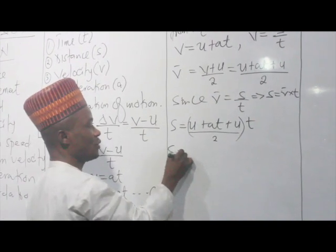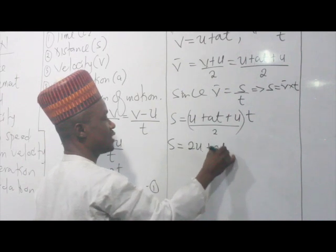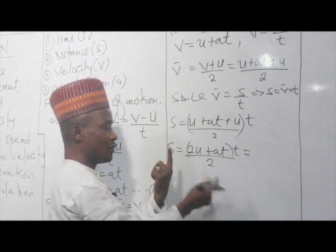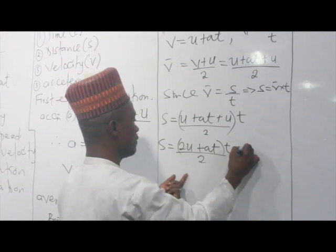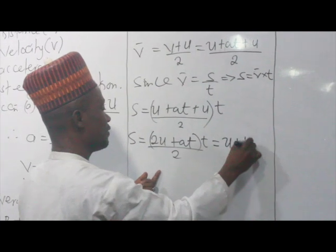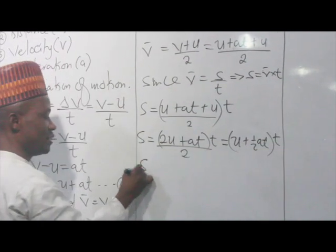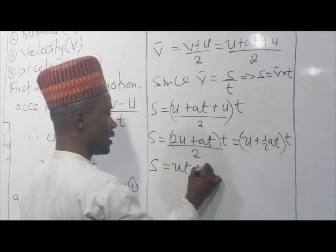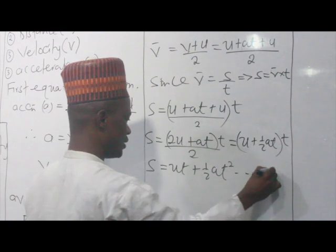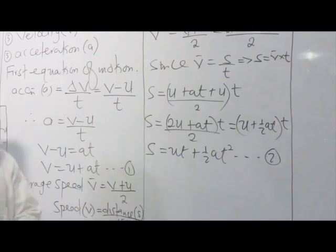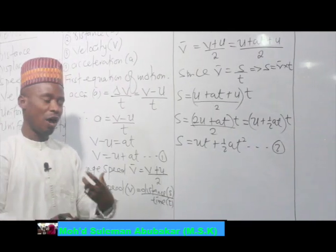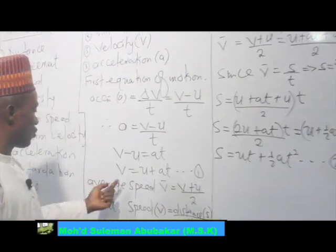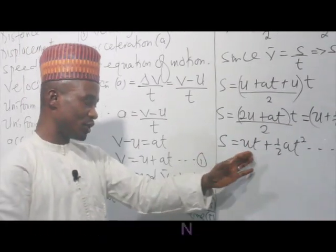Expanding this expression gives s = (2ut + at²) / 2, which simplifies to s = ut + ½at². This is the second equation of motion. In summary: equation 1 is v = u + at; equation 2 is s = ut + ½at². Here v is final velocity, u is initial velocity, a is acceleration, t is time, and s is total distance covered.